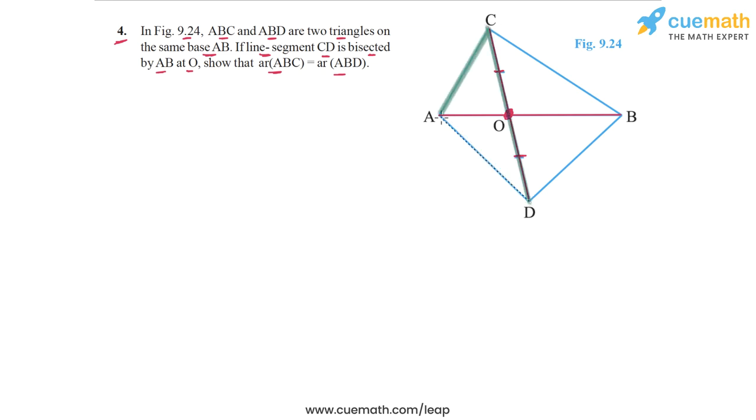AO will divide this triangle into two parts of equal areas. So the area of triangle AOC and the area of triangle AOD will be equal.